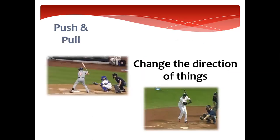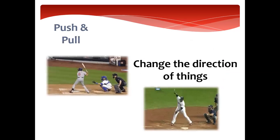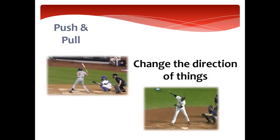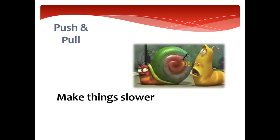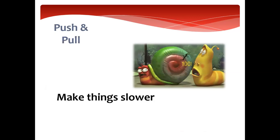Number four: push and pull is important because we change the direction of things. If you want to move something left, right, up, or down, you are pushing and pulling it, so you are changing its direction. Then, it makes things slower — the shell of snails and the shell of turtles make force and power on the animal, so it makes it slower. The last reason: it makes things faster — it can make the thing move faster.